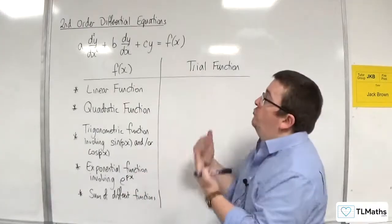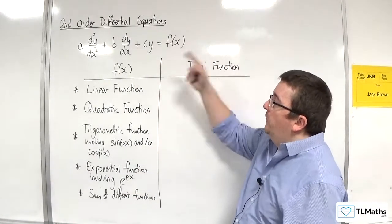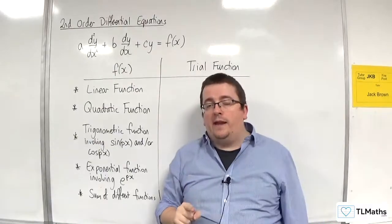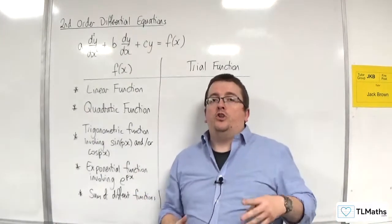Then we look at the right-hand side, the f of x, and we consider what type of function it is and then what our trial function should be.